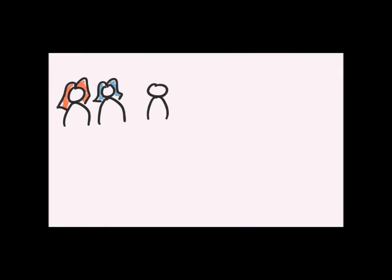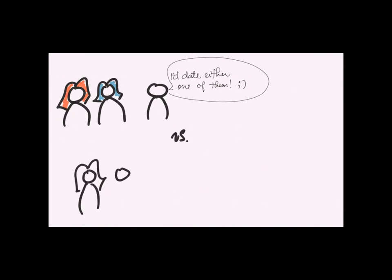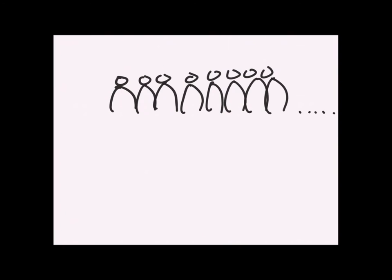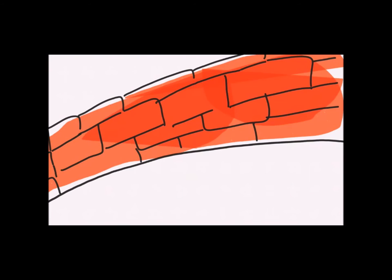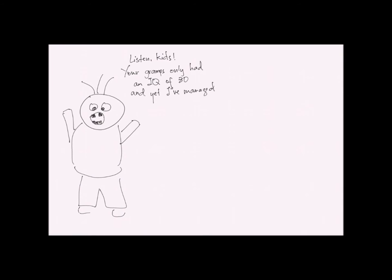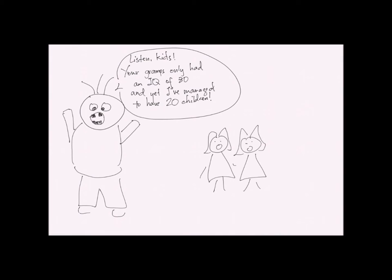The first condition is that mating should be random — for example, a man has no preference regarding the hair color of the woman. The second condition is that mutations should not occur in the population. The third is that the population must be large enough that genetic drift is not an issue. The fourth is that there should be no migration in or out of the population. The fifth and last condition is that natural selection does not occur. Under these conditions, all alleles have an equal chance of being passed down to the next generation.